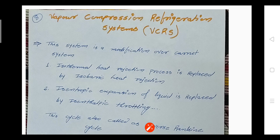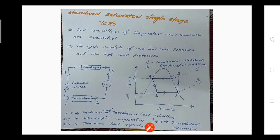This cycle is also known as the reverse Rankine cycle. Now we will see how this cycle works and how it looks on the TS diagram. We look at the standard saturated single stage VCR cycle. The exit conditions of the evaporator and condenser are saturated. In the reverse Carnot cycle, the exit condition of the evaporator is not saturated — it is a wet condition, a mixture of vapor and liquid.